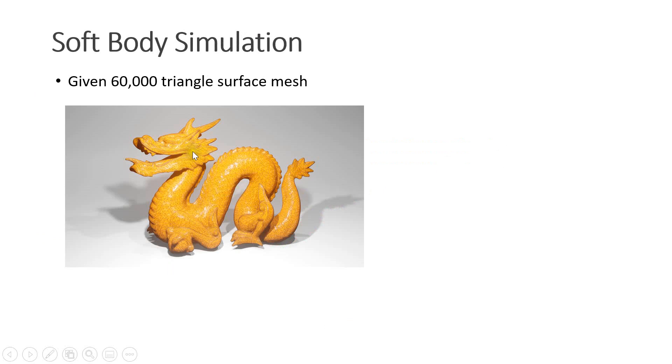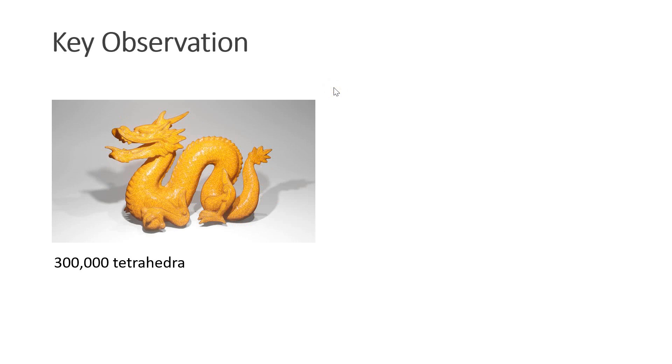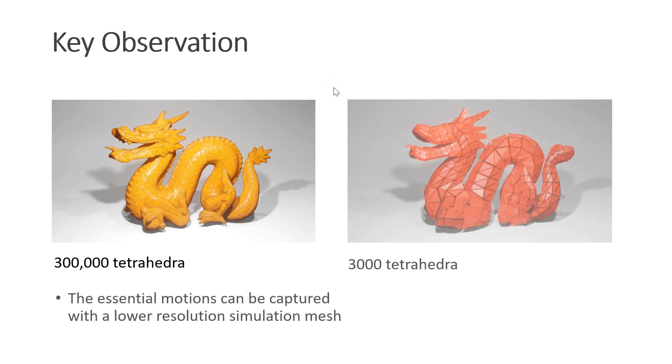So here we have a surface mesh of 60,000 triangles and let's say we want to simulate this as a soft body. What we can do is tetrahedralize the volume surrounded by this surface mesh. However, with 60,000 triangles we probably get something like 300,000 tetrahedra, which of course yields a very slow simulation. Now there's a key observation to speed up the simulation. The essential motion of this dragon can be captured with a very low resolution simulation mesh. So here I use only 3000 tetrahedra.